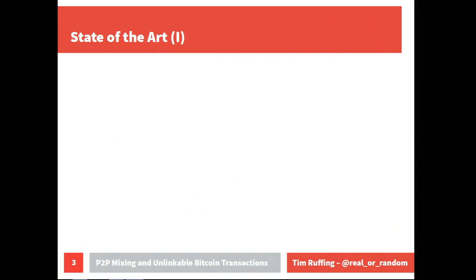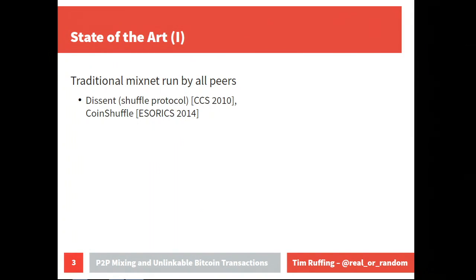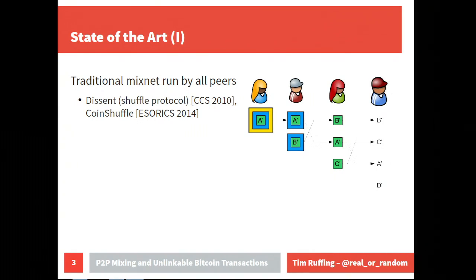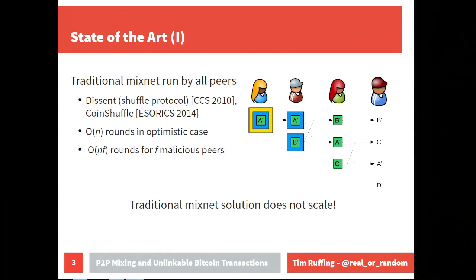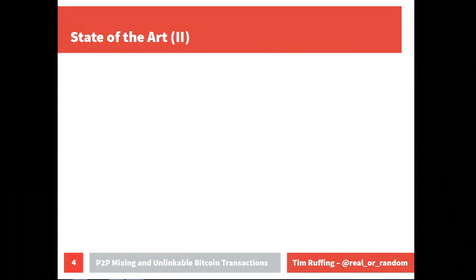Looking at the state of the art, what appears in the literature is basically traditional mix-nets run by all the peers. This has appeared in the Shuffle protocol from CCS 2010 and our own CoinShuffle protocol from Sororix 2014. Because peers don't trust each other, they all have to implement one of the mixes, which means even if everybody is honest we need O(n) communication rounds. With f malicious peers, we need O(n·f) rounds, so traditional mixnet solutions don't scale.